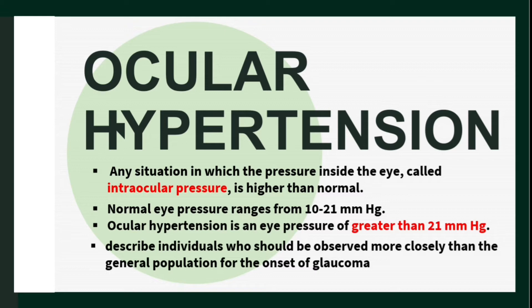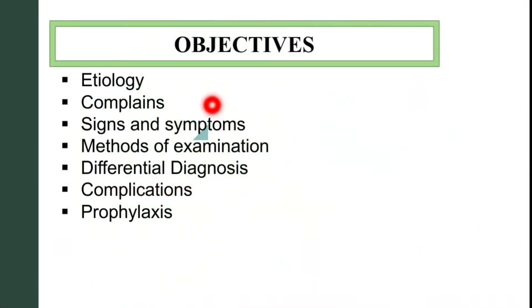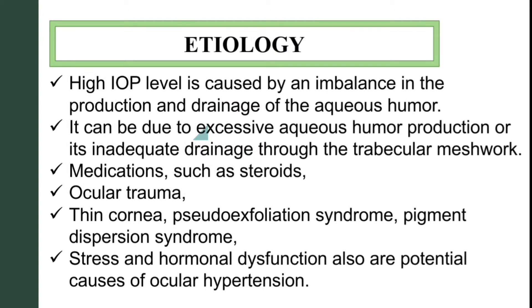be observed more closely than the general population for the onset of glaucoma. Ocular hypertension is also known as 'glaucoma suspect,' meaning people with intraocular pressure higher than 21 millimeters of mercury are known as glaucoma suspects. In this video, we are going to talk about etiology, complaints, signs and symptoms, methods of examination, differential diagnosis, complications, and prophylaxis of ocular hypertension.